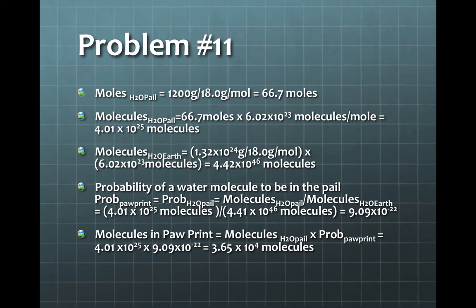From these numbers, we can get the probability that a molecule was in the paw print. We get this by taking the ratio of the number of molecules in the pail over the number of molecules of water on the Earth. Taking that ratio, we get 9.9 times 10 to the negative 22.